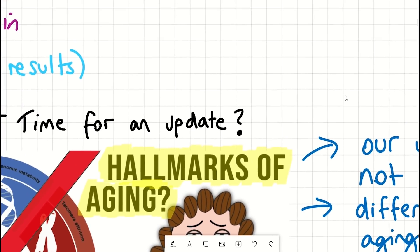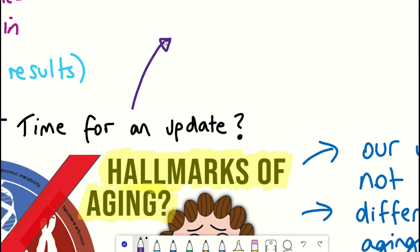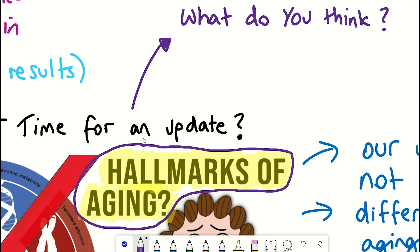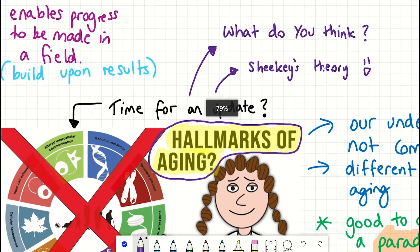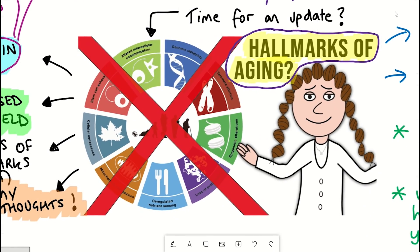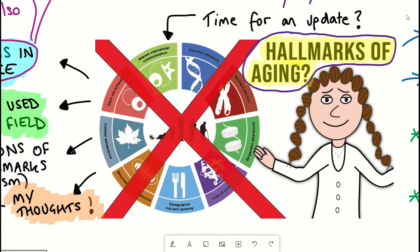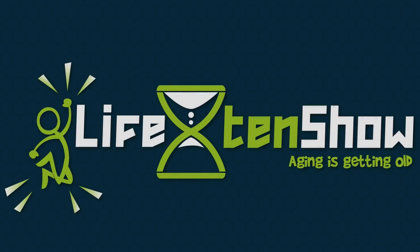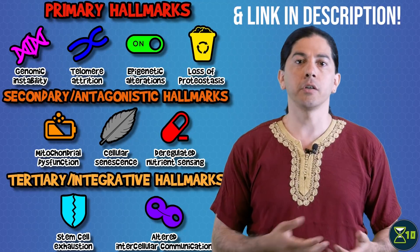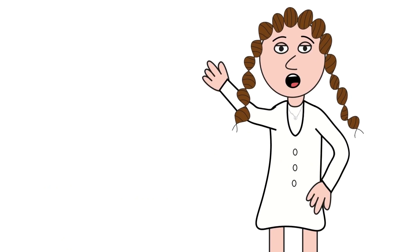I'm certain that having a good paradigm for aging would really help to boost the field even further, even though it seems to be doing quite well at the moment anyway. But I guess the question is: what do you think? Have the Hallmarks helped you to understand the field better, or would you have alternative ideas? Maybe we can create Shiki's theory of aging — I'm joking. Although technically, maybe I have created one through all of my videos somehow and I haven't noticed. Anyway, I hope you have found this video entertaining and that you were able to follow the arguments. Remember to check out Life Extend Show's video as well. Thank you to my Patreon supporters, and thank you for listening.